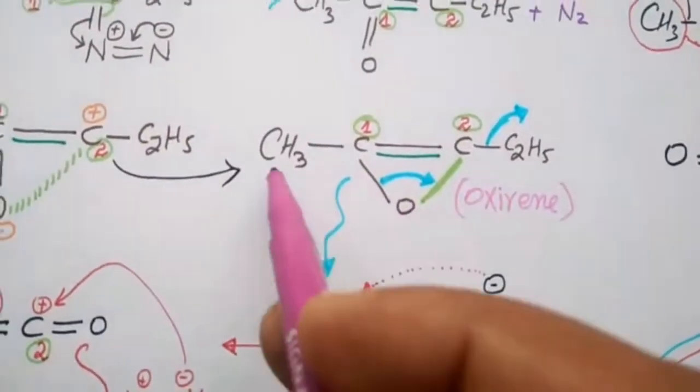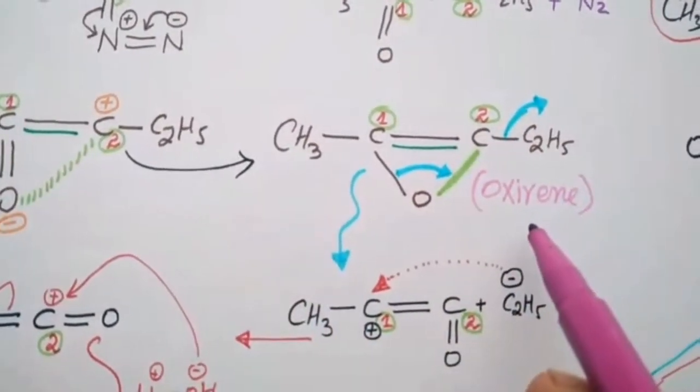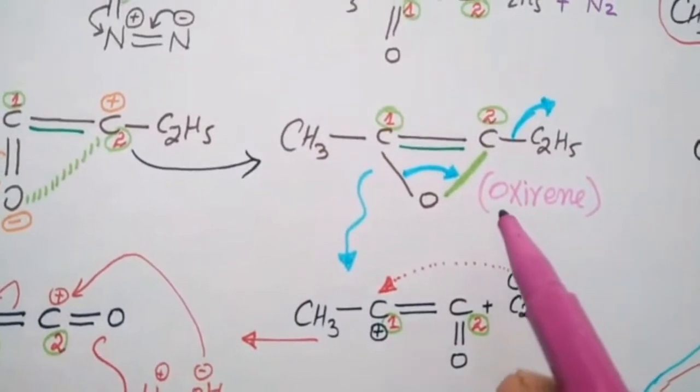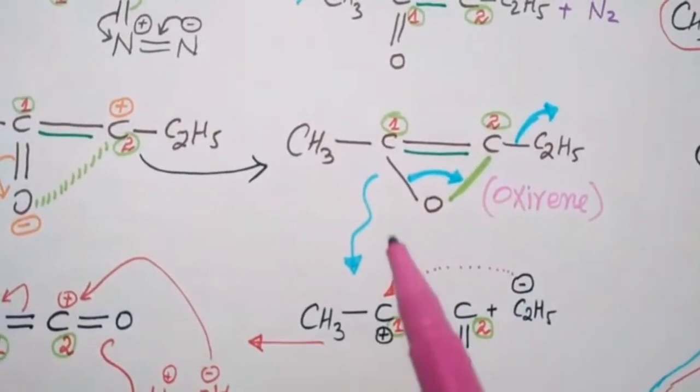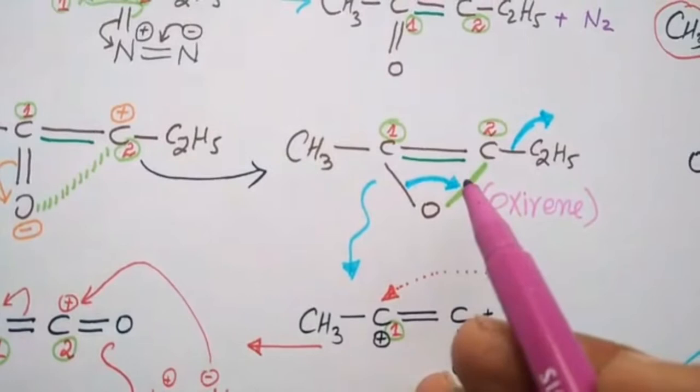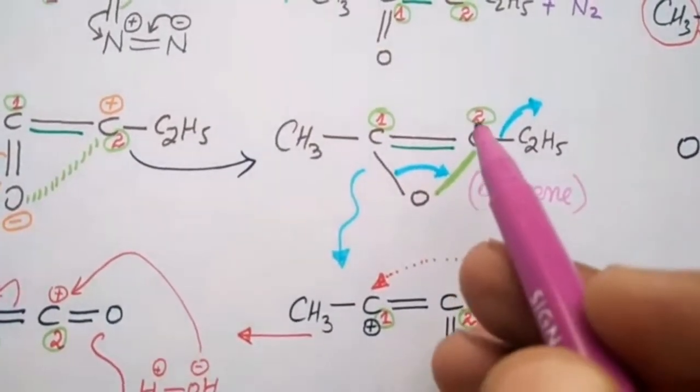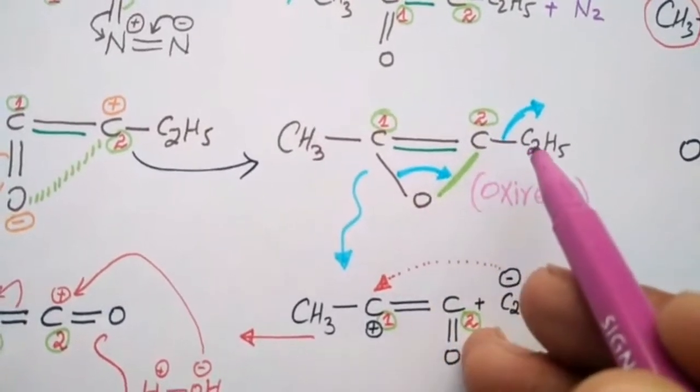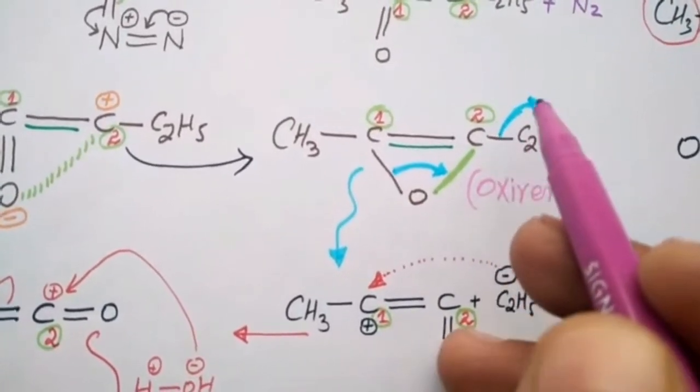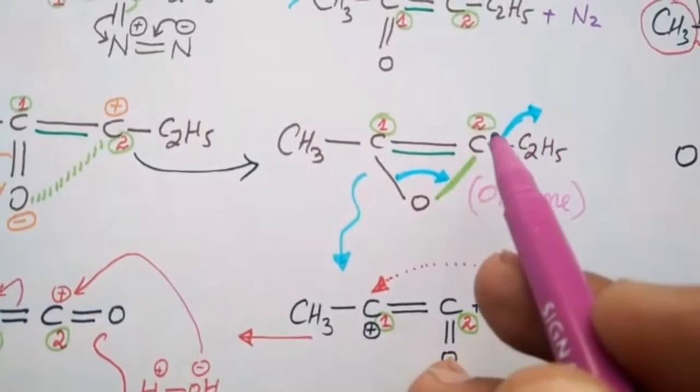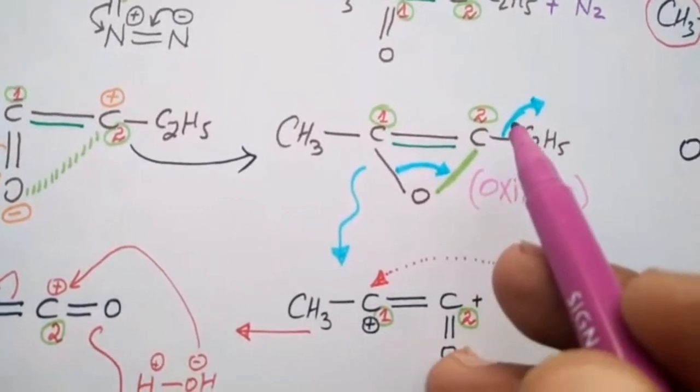And this cyclic compound is known as oxirene. Now in this oxirene, rearrangement occurs again. This bond will shift here. When this bond shifts, on carbon two the carbonyl will appear. At the same time, this alkyl group will leave as a nucleophile.